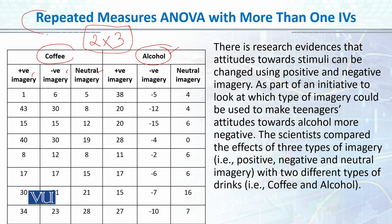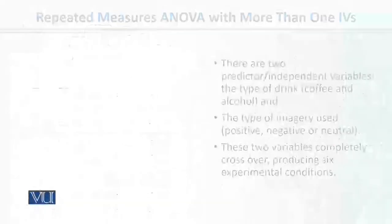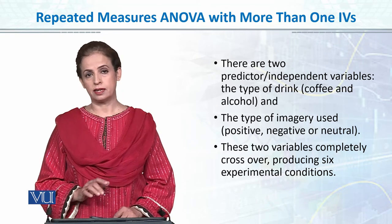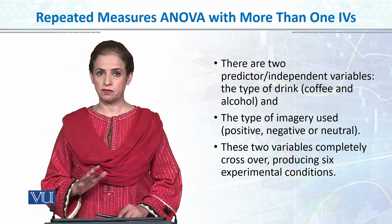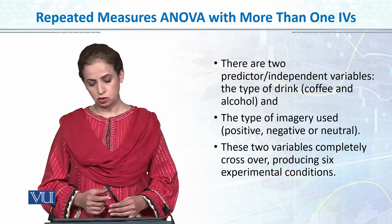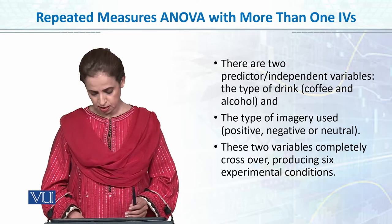Eight participants across all six conditions will be used. There are two predictor or independent variables: type of drink and type of imagery. The type of imagery has three levels — positive, negative, neutral — and type of drink has two levels. These two variables completely cross over, producing six experimental conditions.